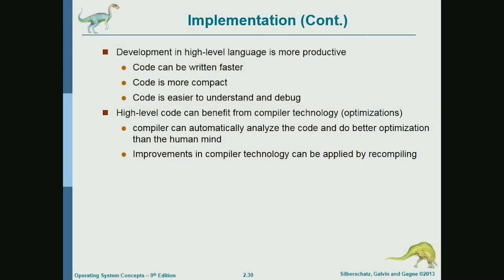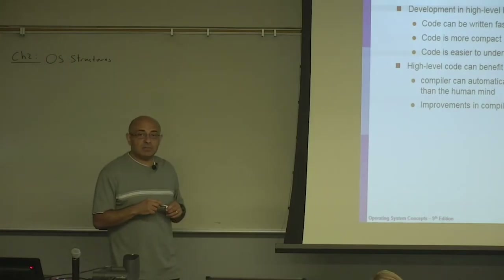These advantages are software engineering advantages: more programming productivity, easier to write, easier to debug — all the reasons that made people develop human-like programming languages. In addition to that, there is a portability advantage. If you write in a high-level language, you can port it to different systems and run the same OS on different systems.